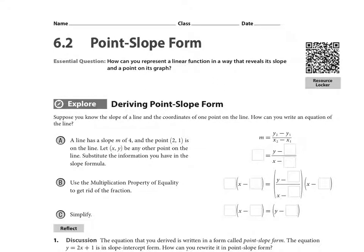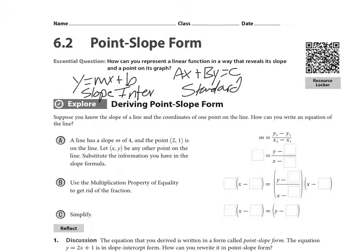So 6.2 is called point-slope form. Now all this is, it's a different form of a linear equation. So now we're going to have three forms we've learned. Y equals MX plus B, what's that one called? That one's called slope-intercept form. AX plus BY equals C, that one's called standard. And that one's typically used for word problems and stuff.